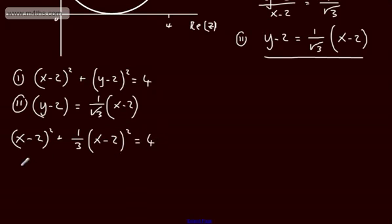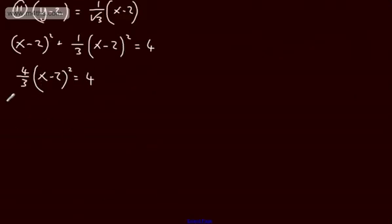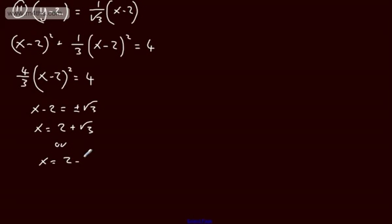Tidying this up: 4 over 3 times x minus 2 all squared is equal to 4. Dividing both sides by 4 and multiplying by 3, and taking the square root, we get x minus 2 equals plus or minus root 3. So x will be equal to 2 plus root 3, or x will be equal to 2 minus root 3.